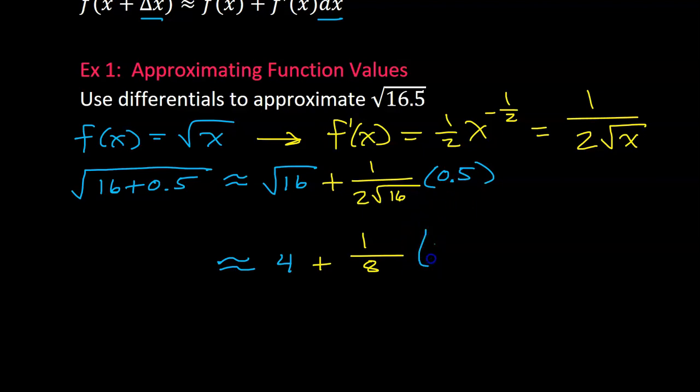Let's go ahead and write the 0.5 as 1 half. That way we don't have to deal with decimals right now. So this is approximately equal to 4 plus 1 sixteenth.